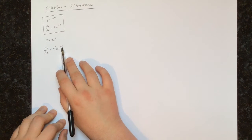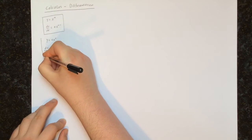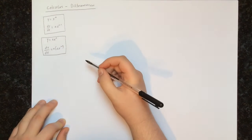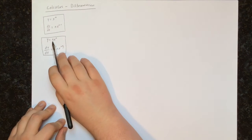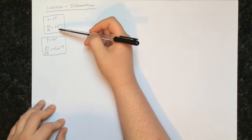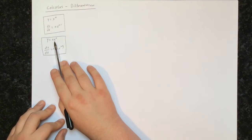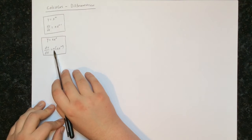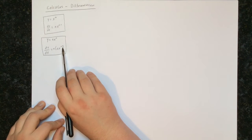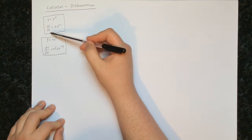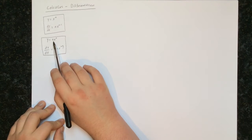We essentially do the same thing as before — multiply by the power and reduce the power by 1 — the only difference is we're also multiplying by the number a. This is our new and more complete formula. You'll notice if a equals 1, then we'll have 1 times x to the power of n, which is just x to the power of n, and the derivative will be n times x to the n minus 1 — our first formula. But if a is not equal to 1, then this formula accounts for those other cases.